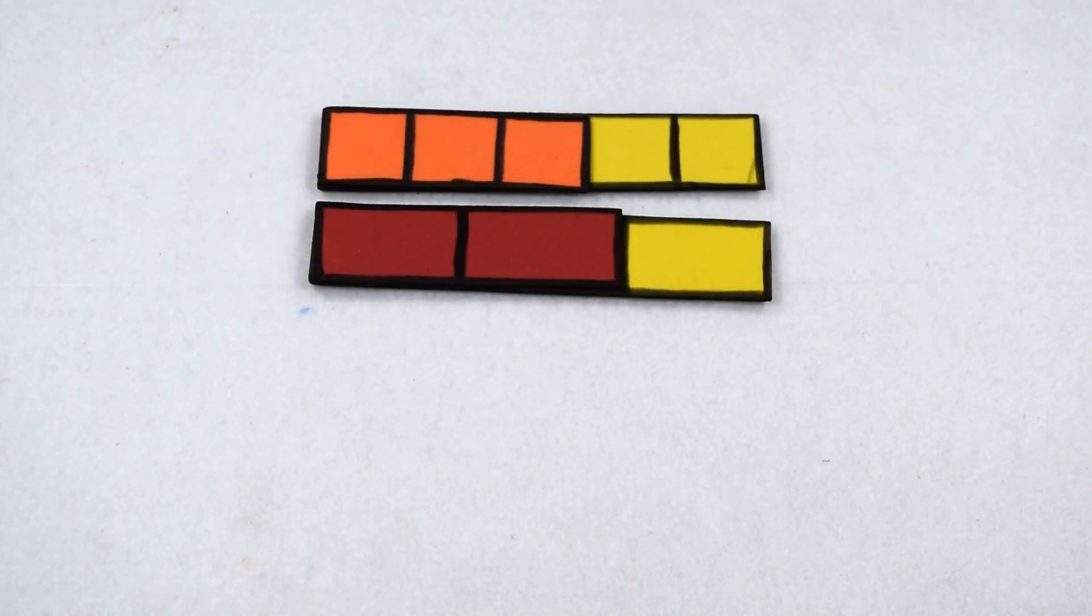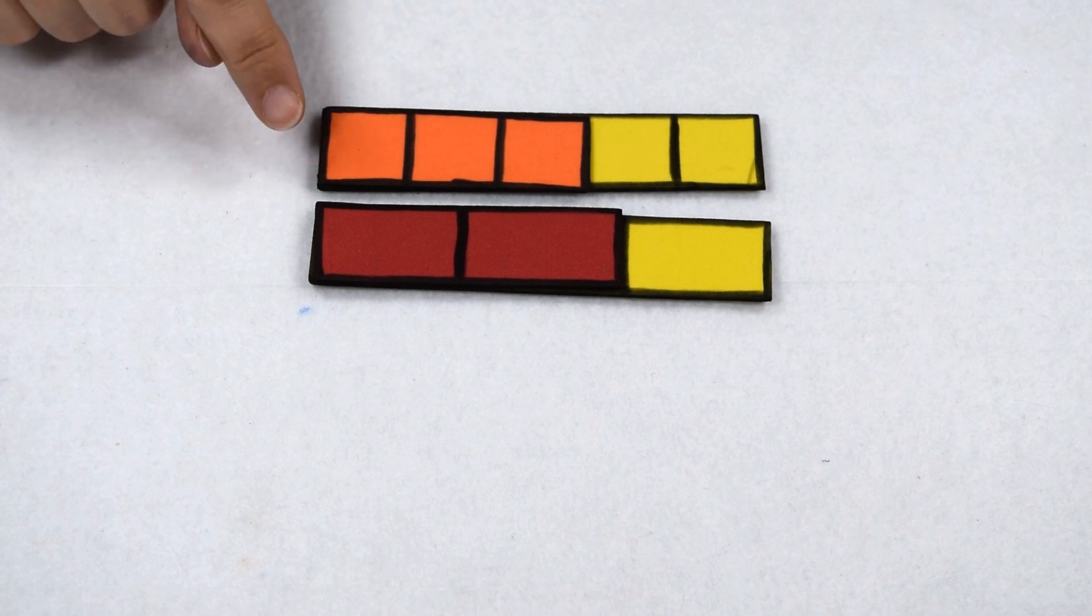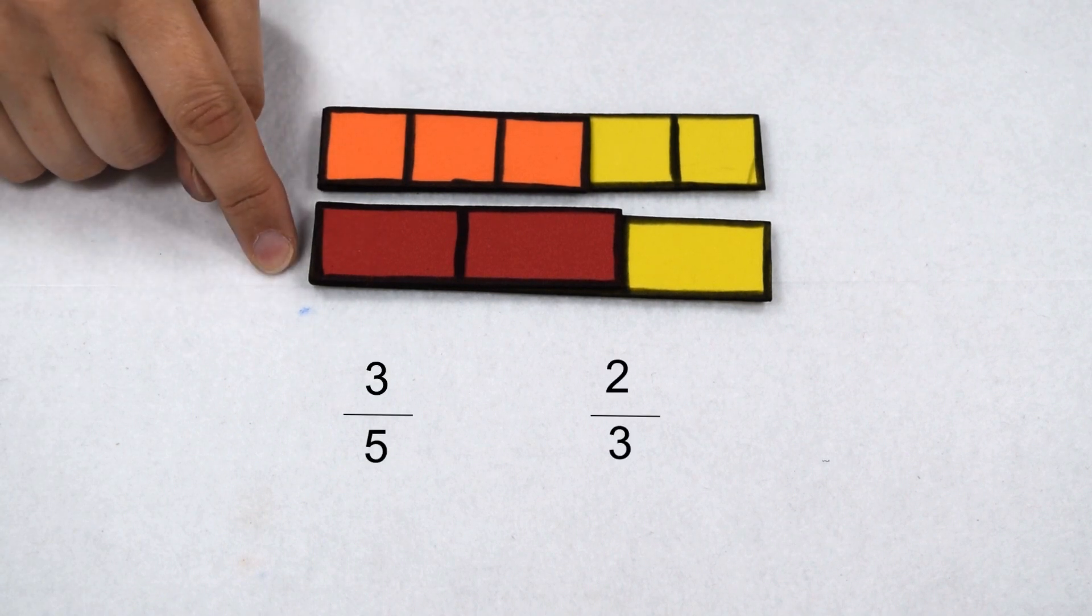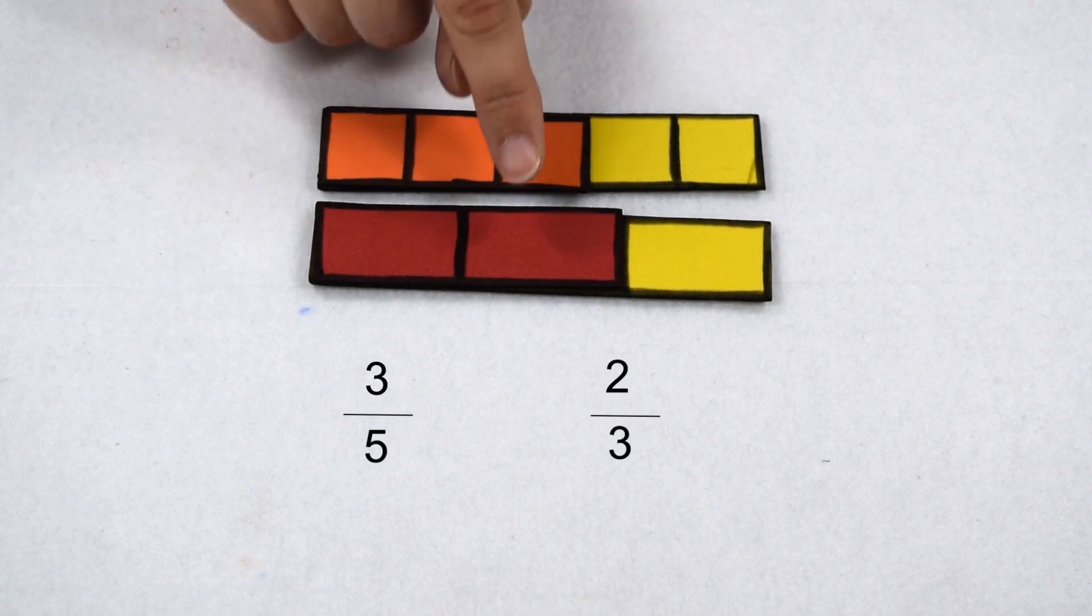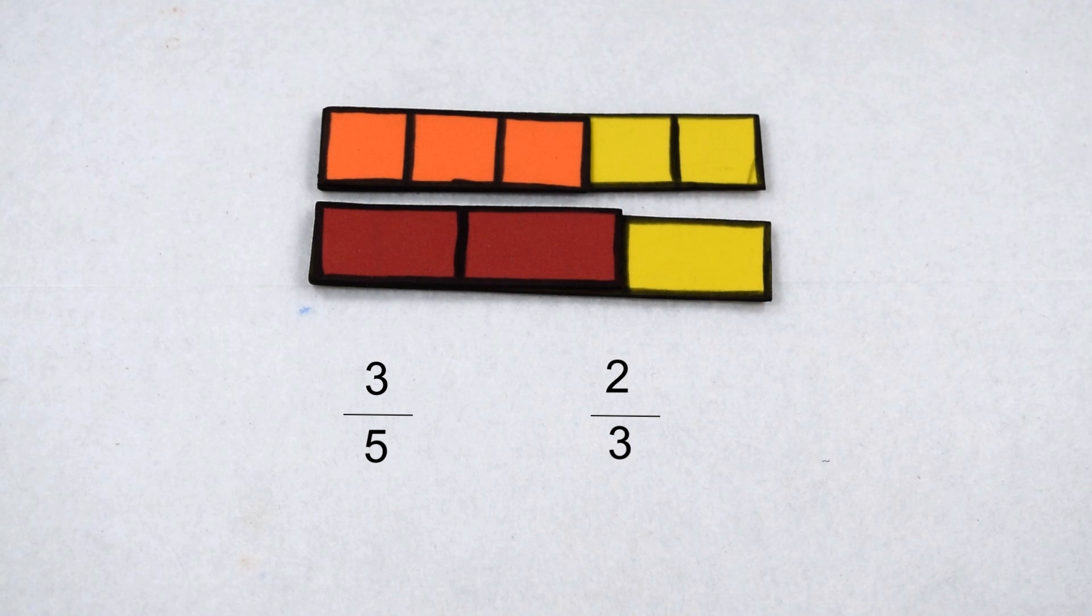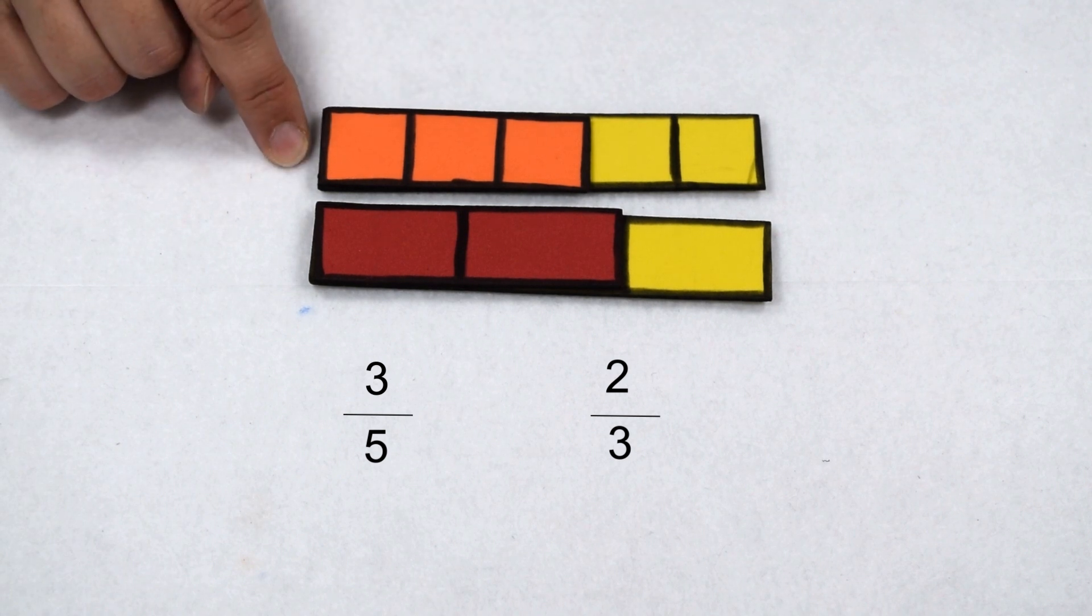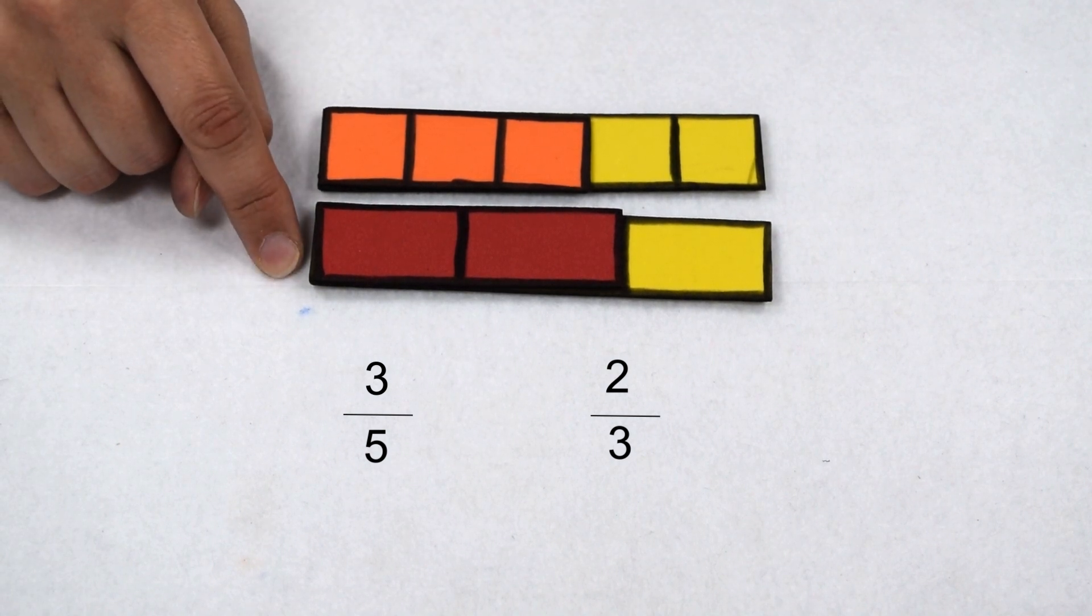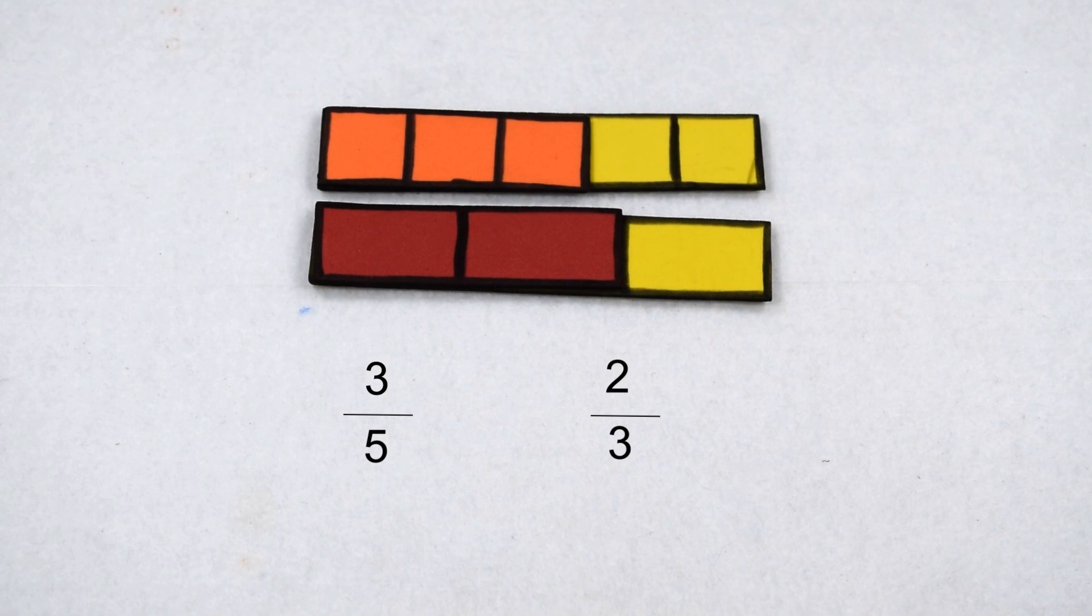Not all of our fractions are going to have the same numerator and denominator. Here we want to compare 3 fifths to 2 thirds. We can see our shaded parts are very similar in size to each other. That's why it's important that we draw accurate fraction bars so we can accurately compare them. We can see that 3 fifths is slightly smaller than 2 thirds, so 3 fifths is going to be less than 2 thirds.